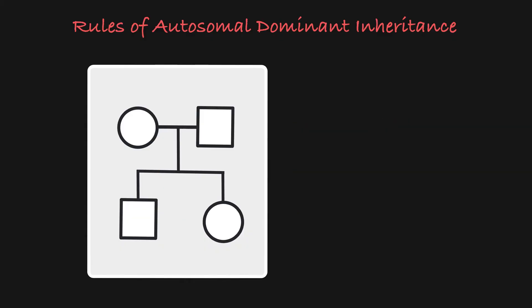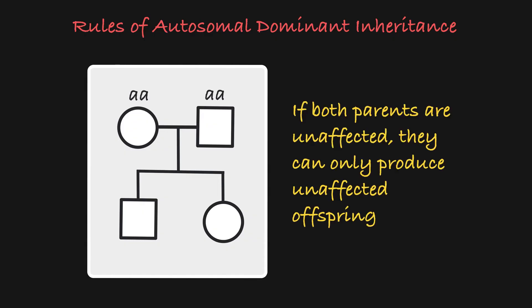That said, when you have two unaffected parents, they cannot have affected offspring. That is because two unaffected parents must be homozygous recessive, which means that their children must all be homozygous recessive and therefore unaffected as well.